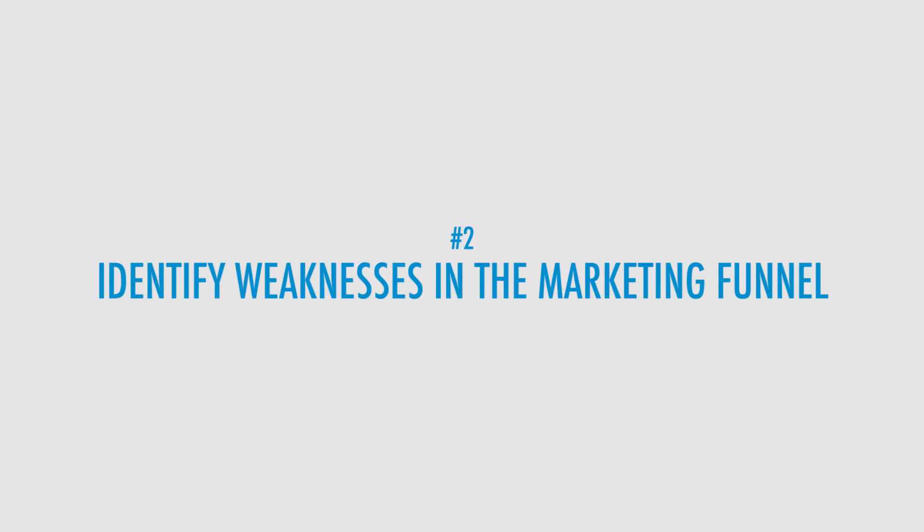Number two is identify weaknesses in your marketing funnel — you've got some. Figure out where they are. Typically, it's not enough traffic, or your conversion sucks, or you don't get enough customers turning into advocates. Whatever it may be, you've got problems there. Figure out where they are because you usually want to solve them.